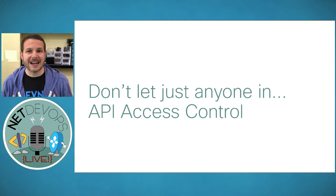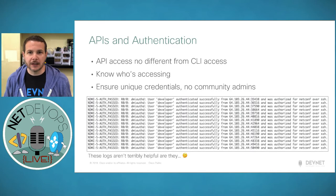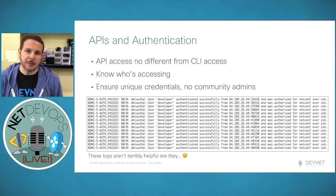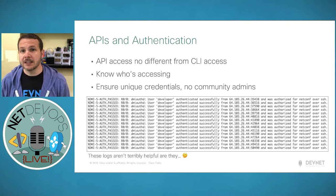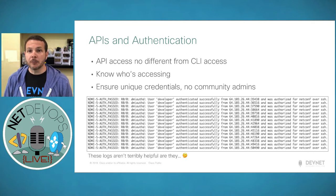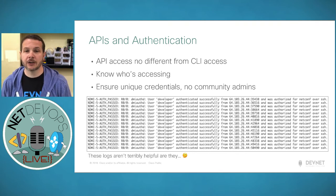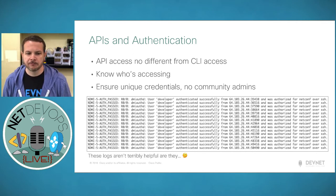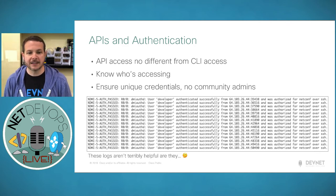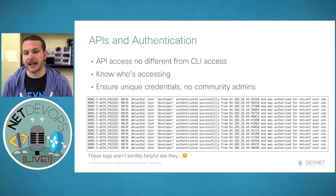Our first section: let's not just let anybody into our devices — API access control strategies. The first thing we want to talk about is authentication. We don't want to look at APIs and providing access to our network any differently than CLI access. It's really important to know who's accessing our devices and what they did with that access. The first step is to ensure you're leveraging unique credentials — avoid community or team-wide admin accounts that everybody uses. In a shared sandbox log, everybody always comes in as user 'developer', which isn't helpful.